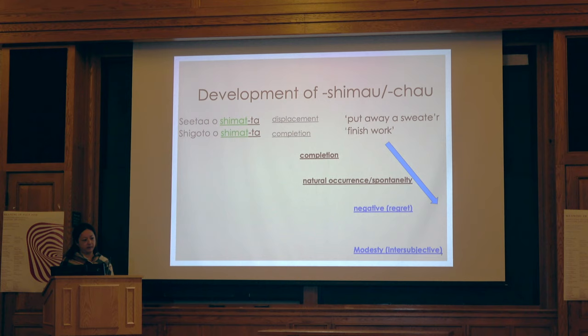Shimau originally meant 'put away' or 'finish,' and now expresses multiple meanings with shades of intersubjectivity. For example, 'shikudai wo shite shimatta' — 'I finished doing my homework' — is a referential meaning, not yet subjective.